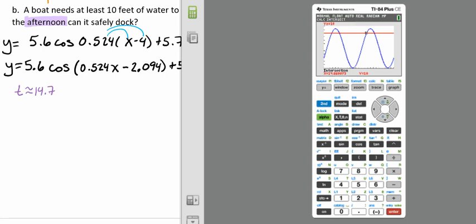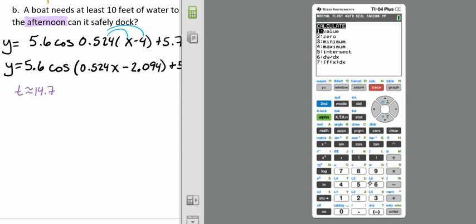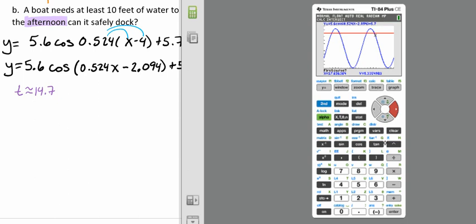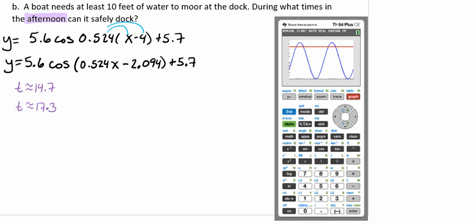Then we're going to find the intersect of our other side. Same thing: second, trace, option number 5 to calculate. We'll move over so we're closer to our other intersection point. We'll hit enter, and then enter again for our second line. Here it tells us it's about 17.3 hours. We'll write that down.